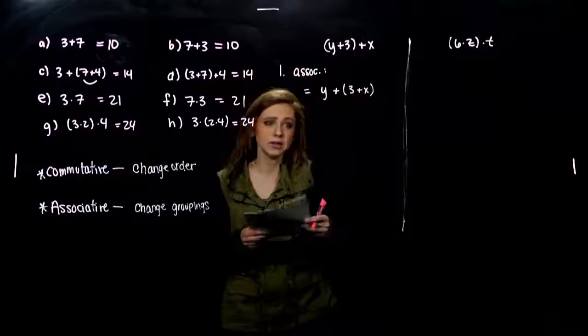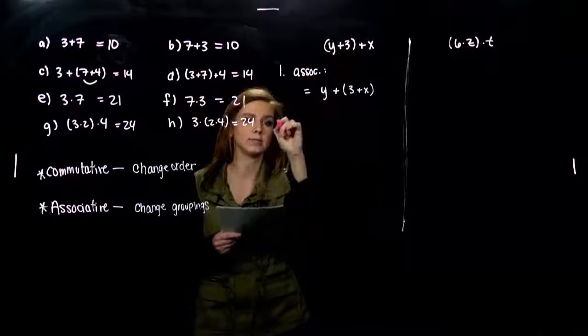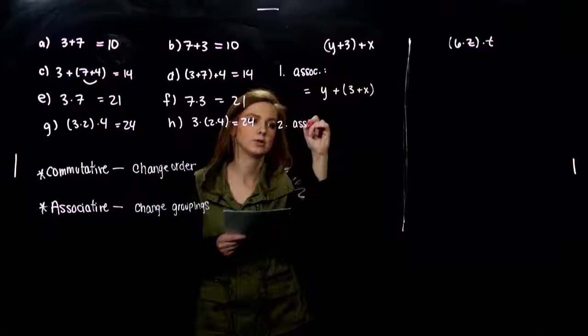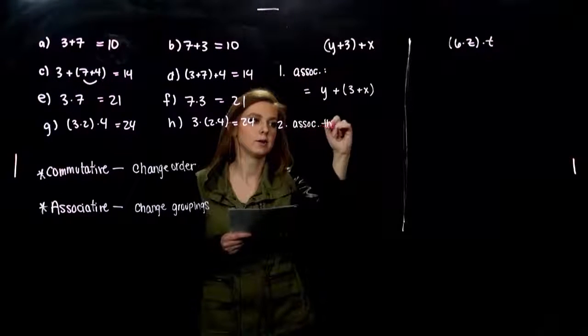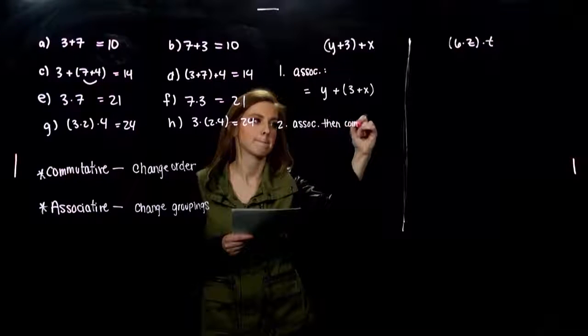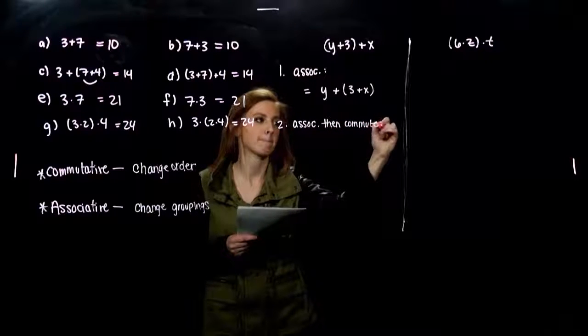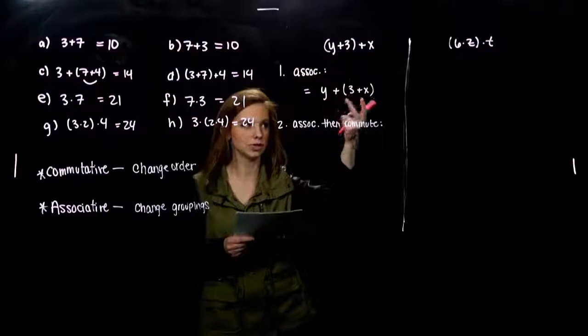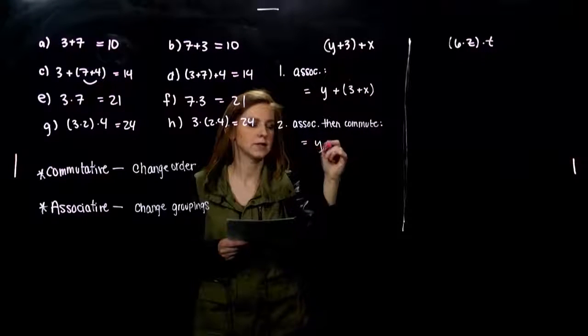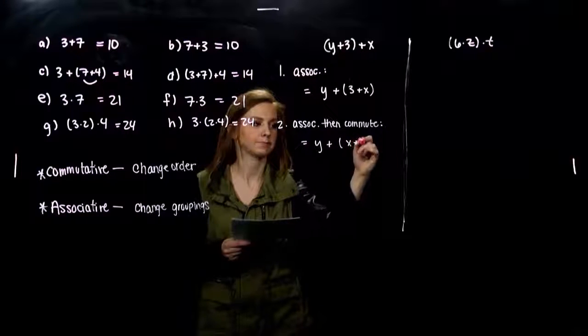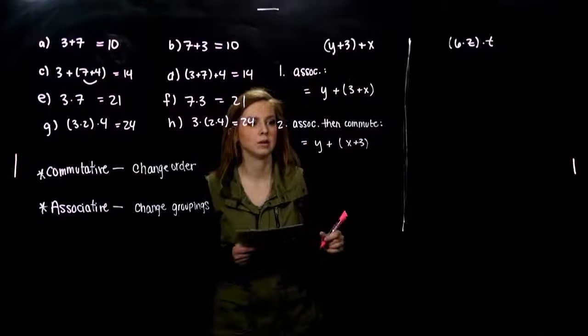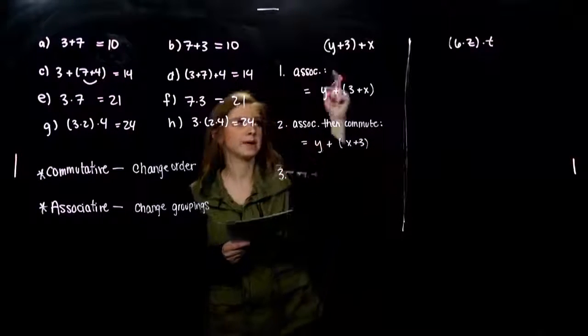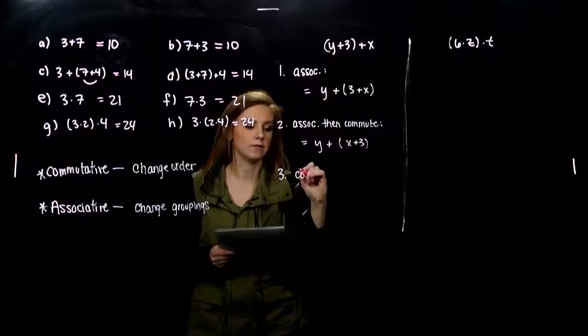I could even combine them. I could associate it. So I could do the associative law, then commute it. So what does that mean? I changed the groupings, and now on the inside, I'll change the order around. It means the same thing.